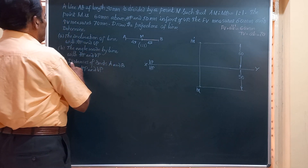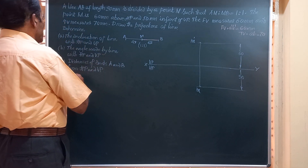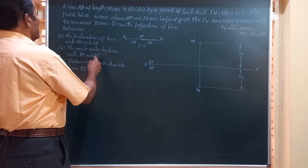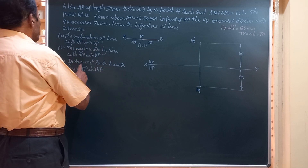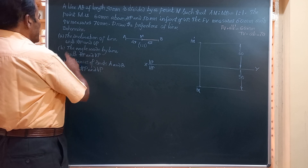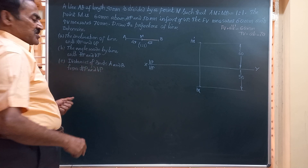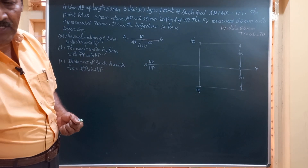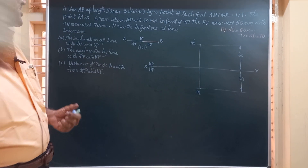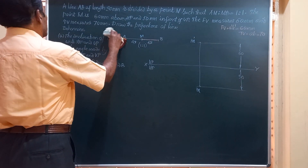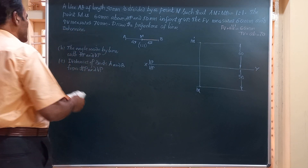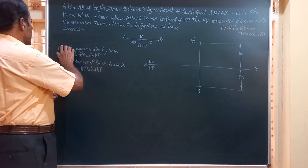We have been asked to determine the following parameters: the inclination of the line, meaning the angle made with HP and VP. The angle made by the line with HP and VP means one and the same thing. Also the distance of the ends A and B from HP and VP. These are the parameters we are required to find out.